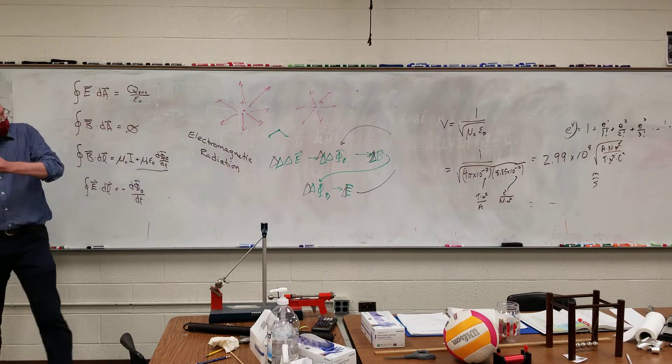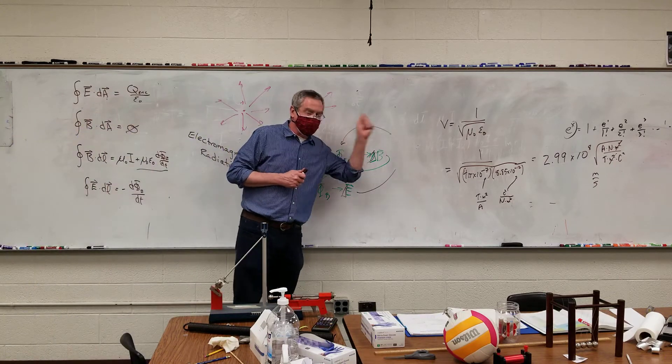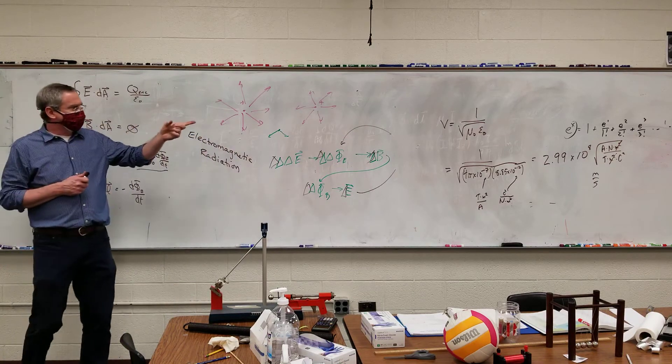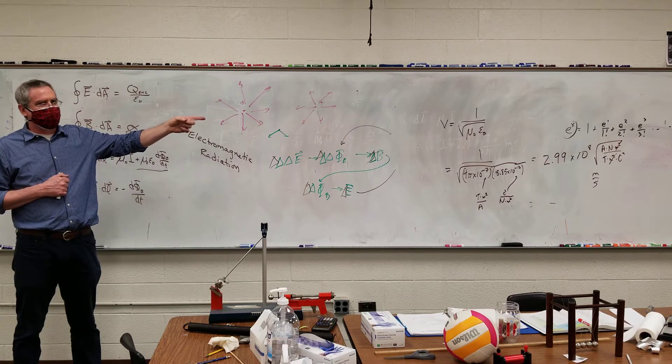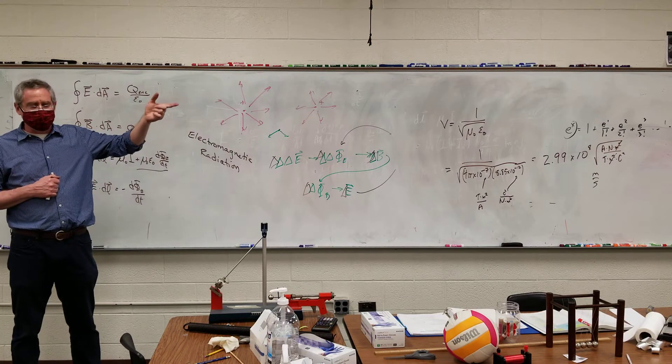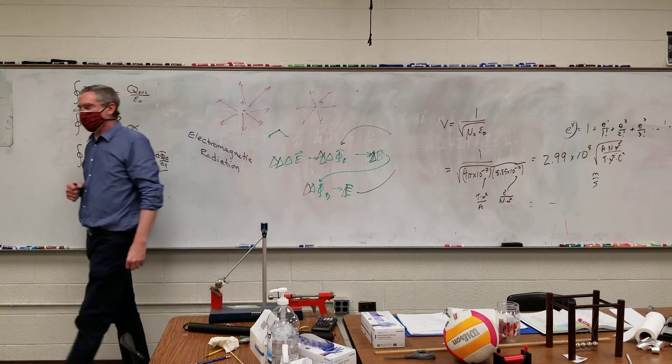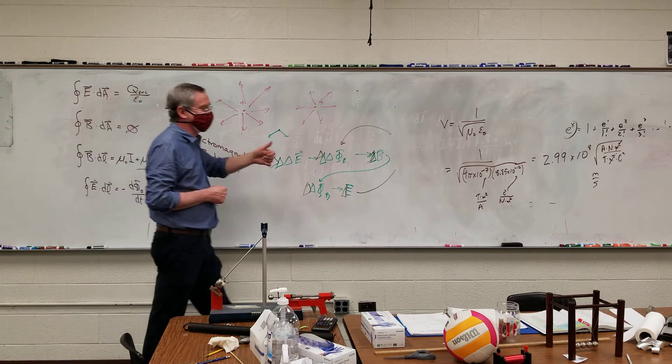All right, so Maxwell saw this and he goes, wait a second, that's really close to the speed of light. Now, a question might come up of how do you actually calculate the speed of light. Maxwell was doing this in the 1870s. The first attempt that I know of trying to find the speed of light was done by Galileo.